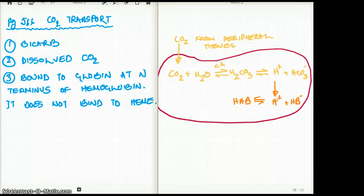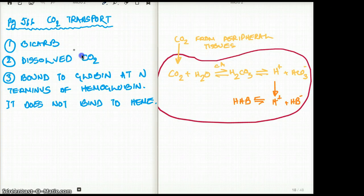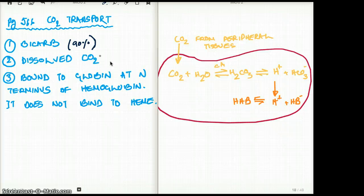This video talks about carbon dioxide transport. Carbon dioxide transport occurs in three different ways. There is the bicarb, which carries about 90% of all the carbon dioxide. Then there is dissolved carbon dioxide in the plasma. And then there is the one bound to globin — it doesn't bind to the heme, it binds to the globin. That's the third way of carrying carbon dioxide.